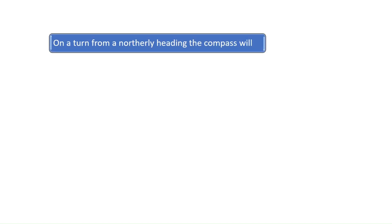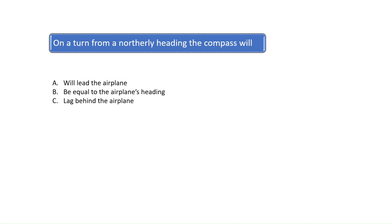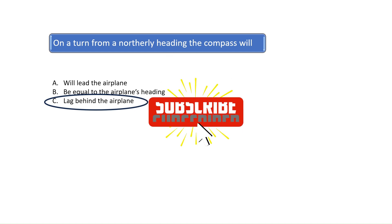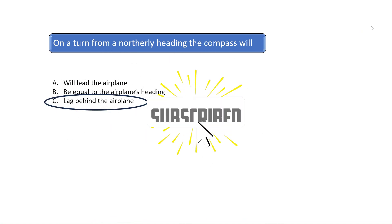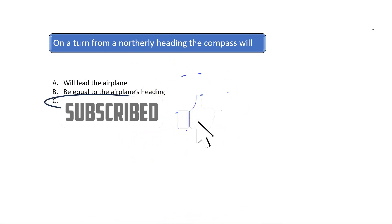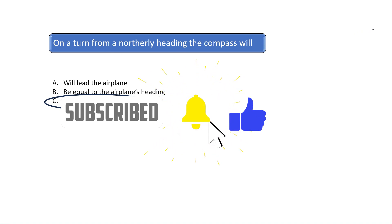Question 5. On a turn from a northerly heading, the compass will — according to Chapter 8 of the Pilot's Handbook of Aeronautical Knowledge — when starting a turn from a northerly heading, the compass will lag behind the airplane. Conversely, while on a southerly heading the compass will lead the turn. The correct answer is C. Thank you for watching the video. Please like and subscribe for more flight training and aviation-related educational videos.